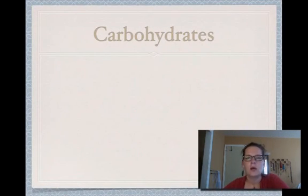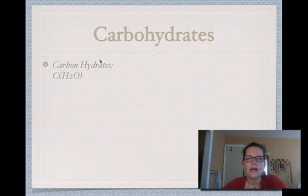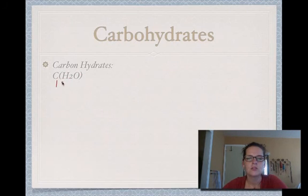The first thing you need to know about carbohydrates is where the term comes from. A carbohydrate is also known as a carbon hydrate — they just shortened the words and put them together. They're called carbon hydrates because the formulas always follow the same pattern: carbon and water. So the formula is always CH₂O, meaning carbohydrates have carbon, hydrogen, and oxygen in a 1:2:1 ratio.